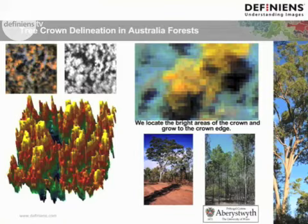The second crown is selected and then we'll start to grow that. Again, we're looking to find these shadow areas which form our valleys. We grow that one, and then moving on to the third and final crown, we'll grow that crown — you can see it's growing, it's a smaller one. And then finally, we'll just clean up our classification. And these are our tree crowns.